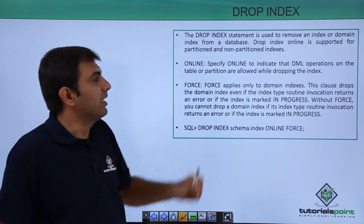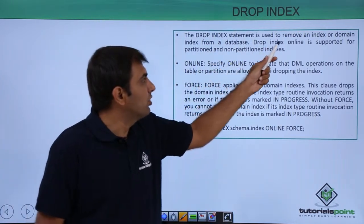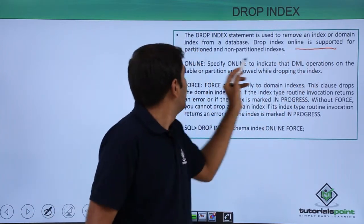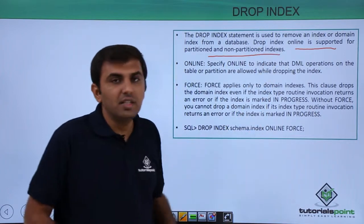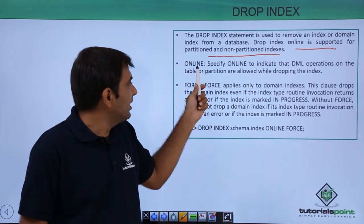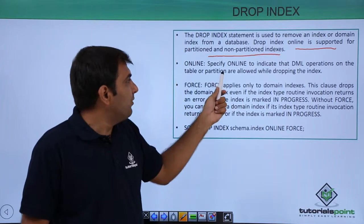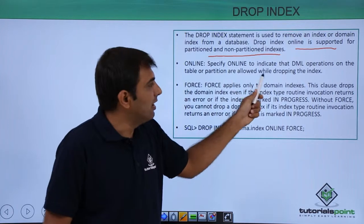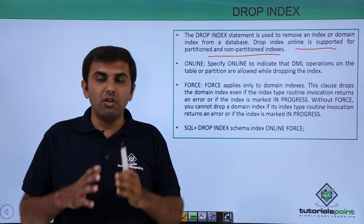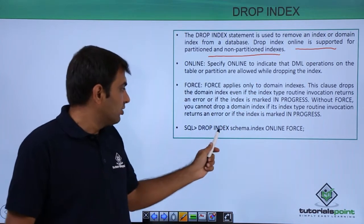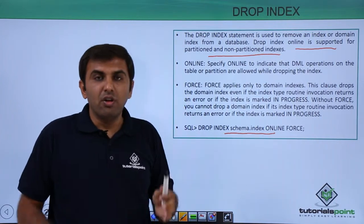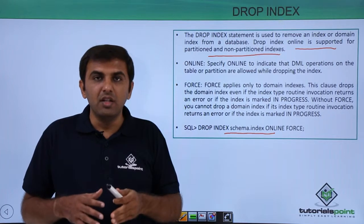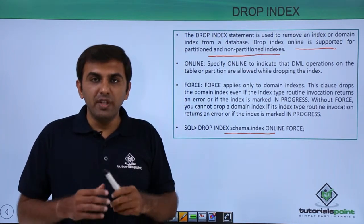The first operation is drop index. The drop index statement is used to remove an index or a domain index from the database. Drop index online is supported for both partitioned and non-partitioned indexes. Specify the online keyword to indicate that DML operations on the table or partitions are allowed while dropping the index — they will not be affected.